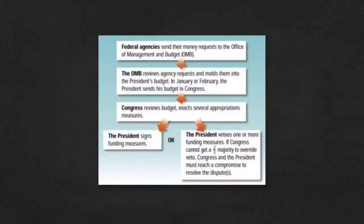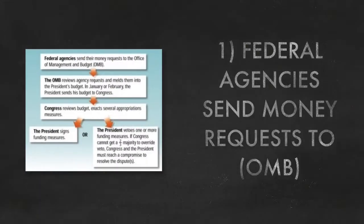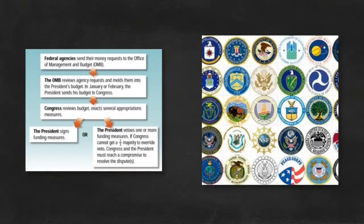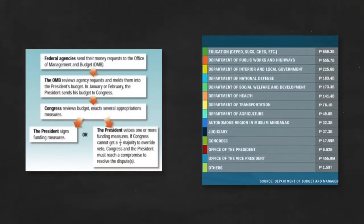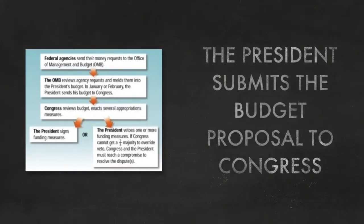Here's an oversimplified version of the budgetary process. First, the federal agencies are going to send money requests to the Office of Management and Budget. There are tons of agencies like the Marines, Western Hemisphere Affairs, the FEC, the Post Office, the FBI. The president and the Office of Management and Budget are going to compile all these requests until they can create one single budget proposal. So now the executive branch has this list of money they say they need in order to carry out all the laws that Congress has passed. The president will then submit this budget proposal to Congress.